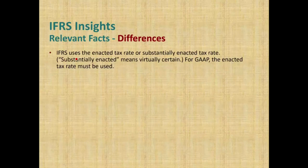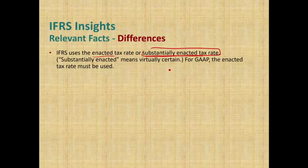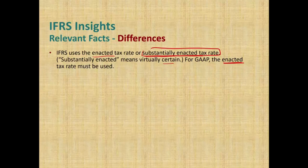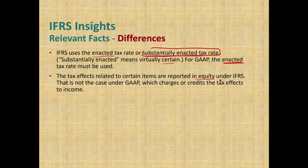Other differences: IFRS uses the enacted tax rate or a substantially enacted tax rate — meaning virtually certain to be enacted — so they can use a projected rate if they believe the legal authority will change the law. This is not acceptable under GAAP, which requires only the enacted rate — the one already passed into law. Additionally, under IFRS, the tax effect related to certain items is reported in equity, whereas under GAAP all differences, whether permanent or temporary, are reported in income.